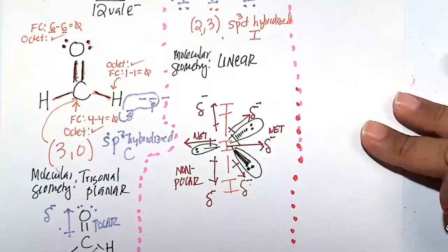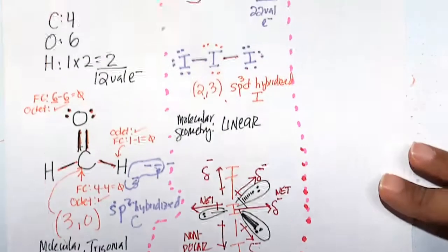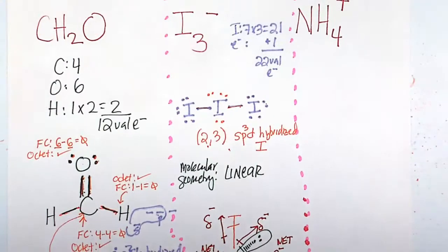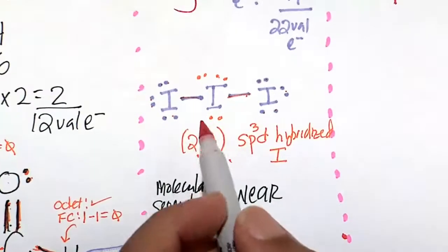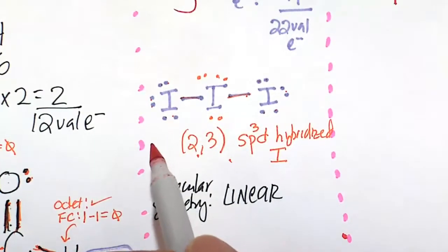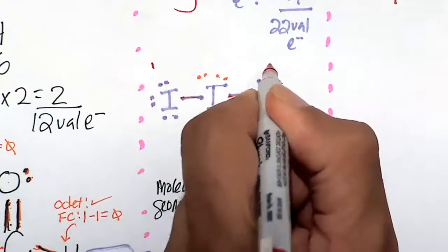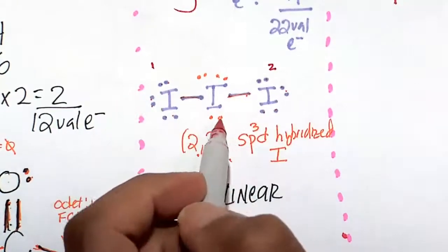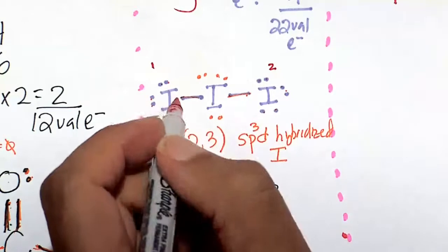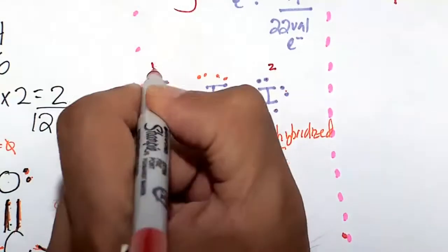Okay, so that's why this is nonpolar. And now what I want to do is talk about the, which is what I should have done at the very beginning, is talk about formal charge and the octet rule. So this iodine is the same as that iodine because they're both single bonded to the center iodine. So this outer iodine, let's look at the formal charge.